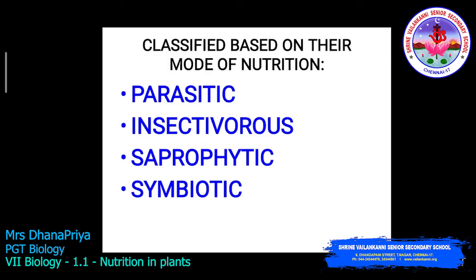Based on the mode of nutrition, heterotrophs are classified into four types: parasitic, insectivorous, saprophytic, and symbiotic. Parasitic means it depends upon the host; insectivorous means it feeds on insects. We will study saprophytic and symbiotic in detail.